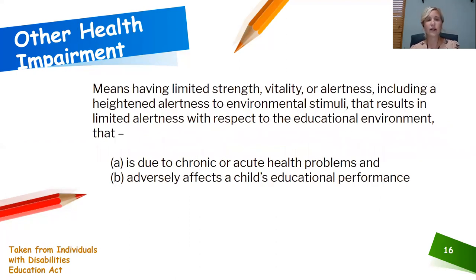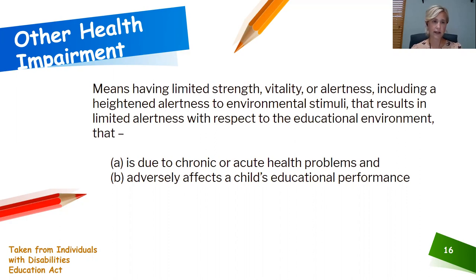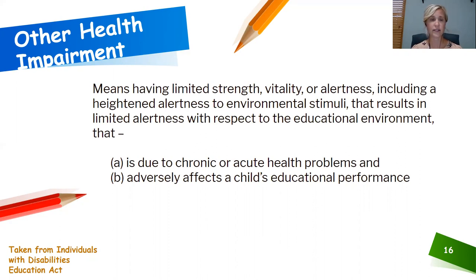Other health impairment is defined by having limited strength, vitality, or alertness — including a heightened alertness to environment — typically due to chronic or acute health problems that adversely affect a child's educational performance. One thing to note is that even if a child may not currently have an active health condition, school districts can suspect this area as an educational disability, particularly if they are concerned with self-regulation skills.